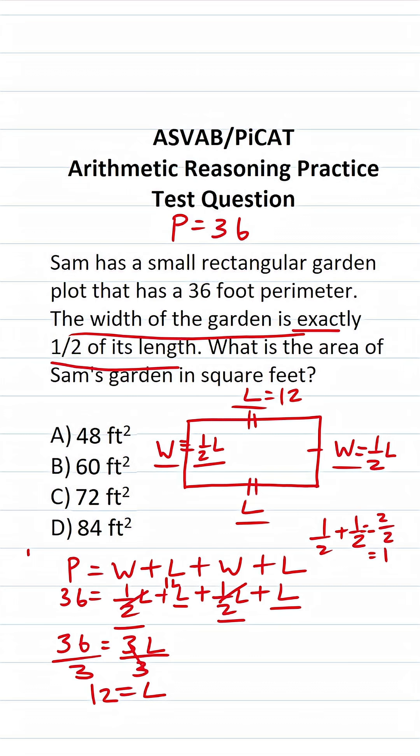What is our width? Our width is one-half of L. So our width is going to be one-half times 12. If you can't do that mentally, do it off to the side. We have one-half times 12. When you multiply fractions, you just multiply straight across. This becomes 1 times 12, which is 12, over 2 times 1, which is 2. 12 divided by 2 is 6. So we can see that our width is going to be 6.